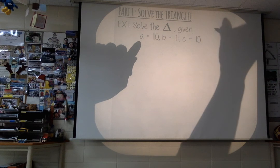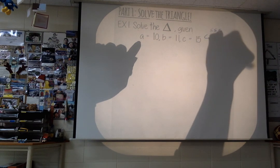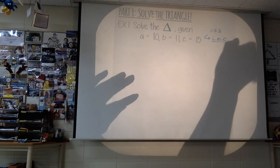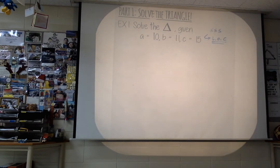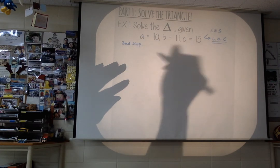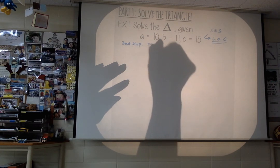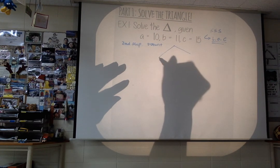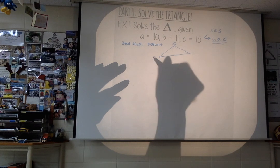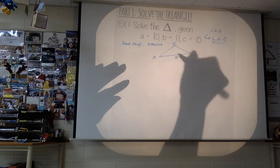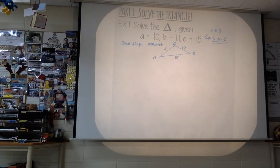What's given to me is side, side, side. So what are you going to use? You're going to use Law of Cosines. Second step: draw it. So we've already done this in class, but watch carefully. Here's triangle ABC — this side is 15, this is 11, and this is 10.